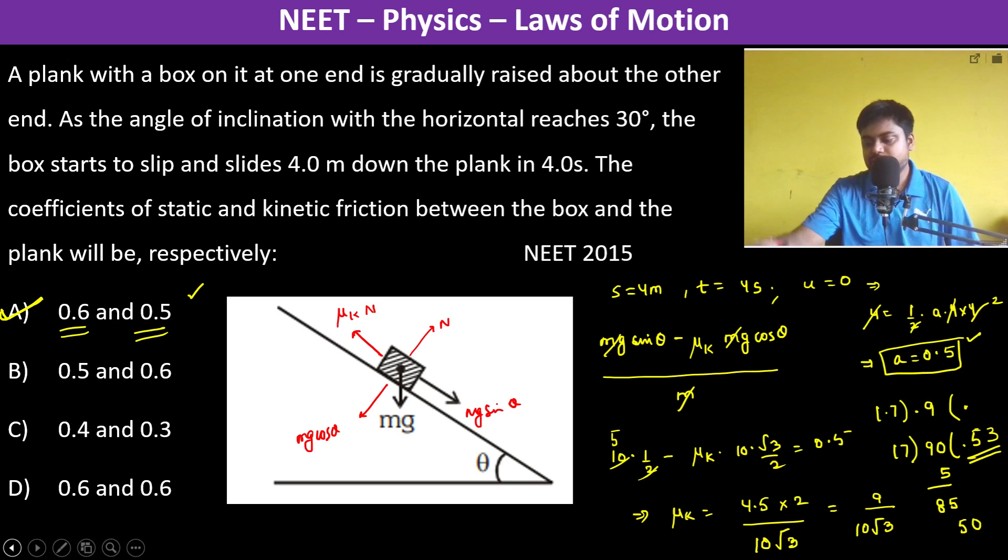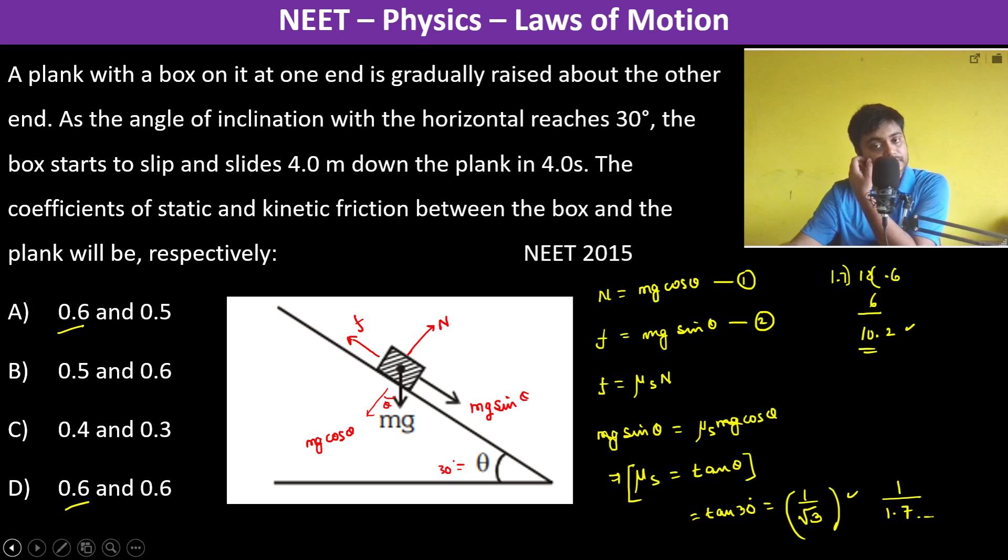One more thing is that as we see, the first thing itself we calculated the static friction coefficient to be 0.6. Now obviously if the sliding is happening, that means kinetic friction is going to act. If suppose the static friction and the kinetic friction had the same coefficient, then it would just have been limiting case and there would not have been any acceleration because we had already seen f is equal to mg sin theta.